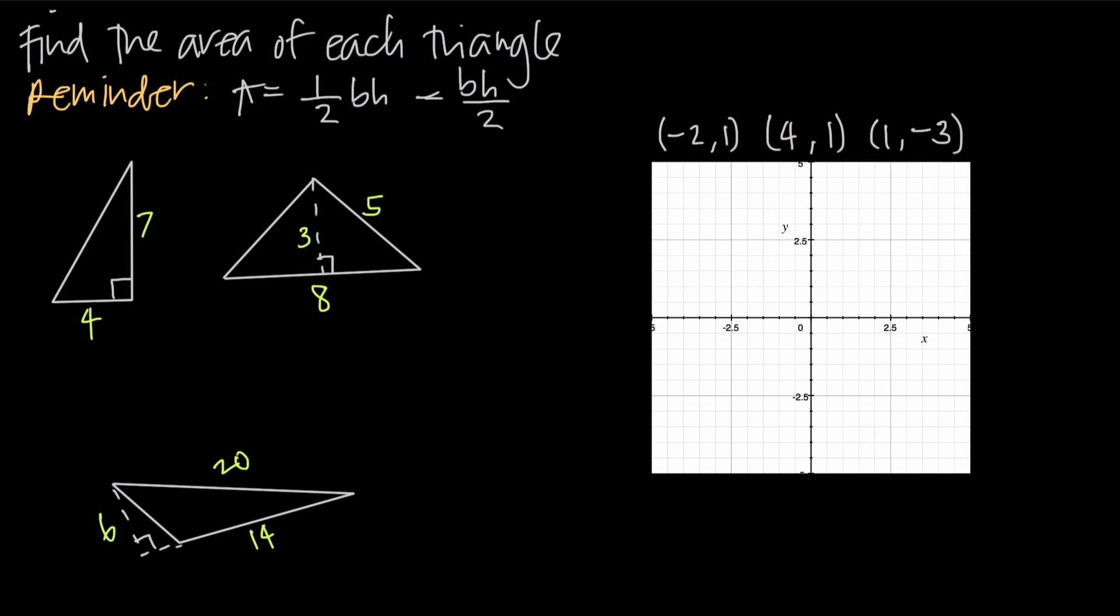In this video, we're doing a couple simple examples about how to find the area of a triangle. The formula that we always use to find the area of a triangle is A equals 1/2 times base times height. You'll also see it written as base times height all divided by 2, or bh over 2. Either way, this is the formula we're going to be using.